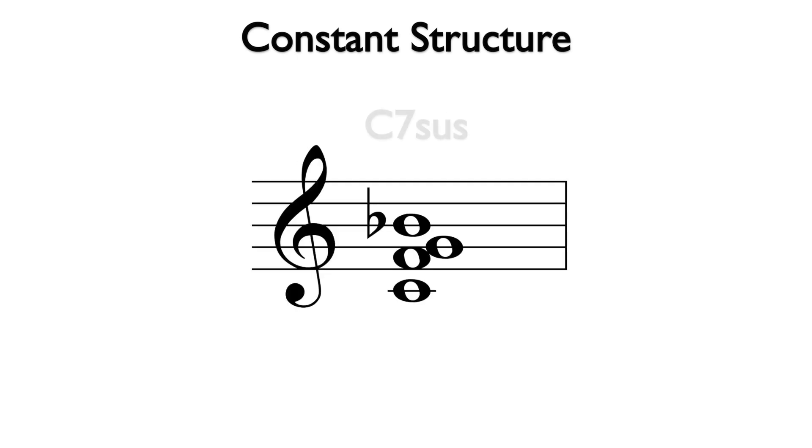And here is a C7 suspended 4, also known as C7 sus. This is based on the C dominant 7th chord, but the third, E, is replaced with a 4th above the root, F.